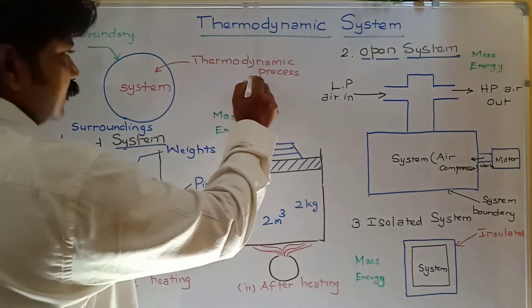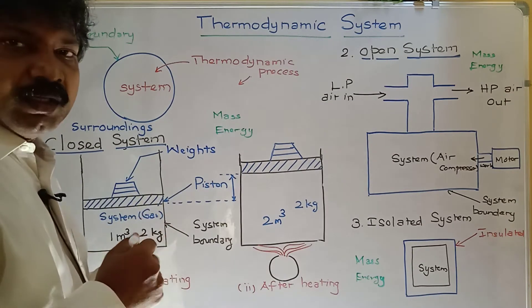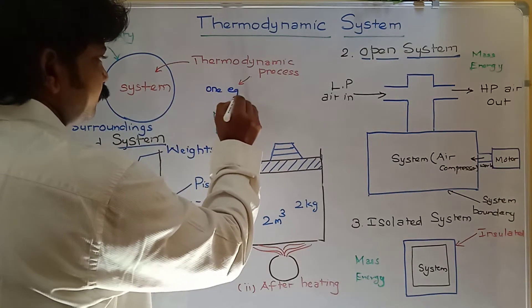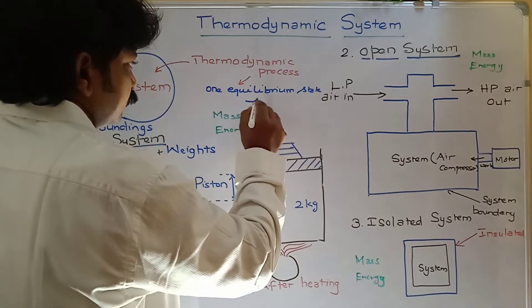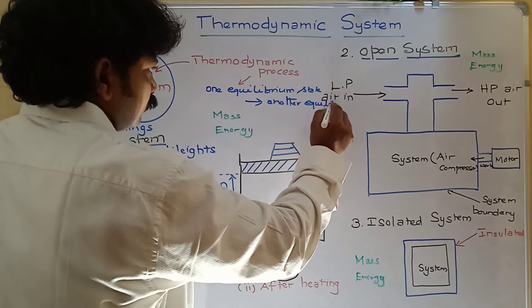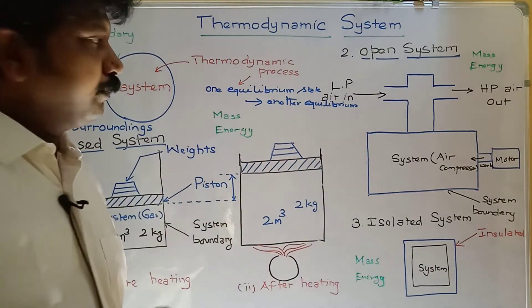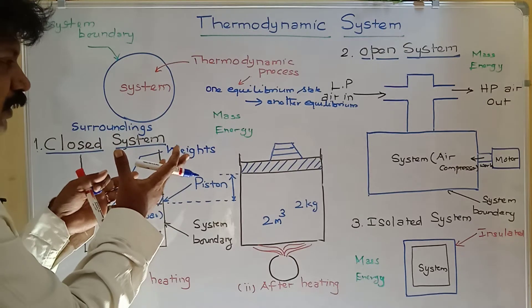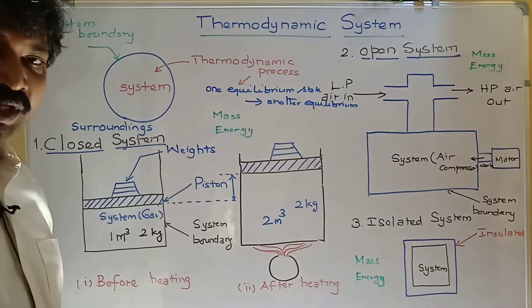A thermodynamic process means a system changing its state from one equilibrium state to another equilibrium state. Equilibrium means constant temperature. So a thermodynamic system is a definite area or space where a thermodynamic process takes place.